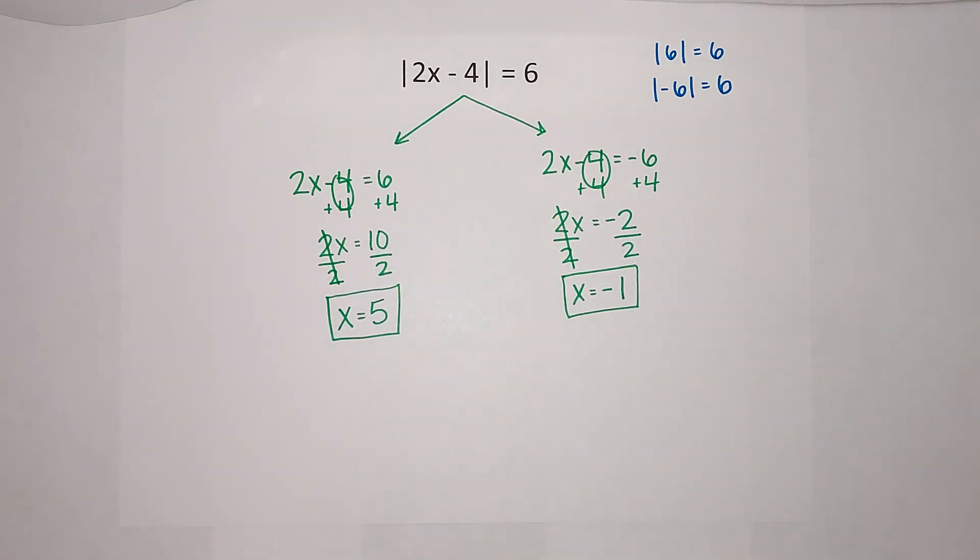So whenever we do absolute value you're going to get two answers because there's two possible things x could be. Hopefully that made sense. I will link some other videos if you need them. Sometimes we might have a number out here which you need to get rid of first. Anyway check those out if you need to but hopefully that made sense, bye.